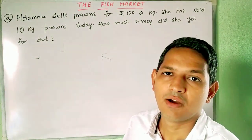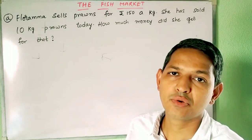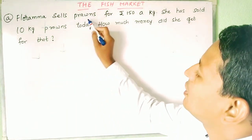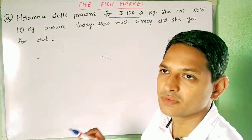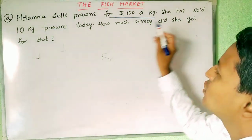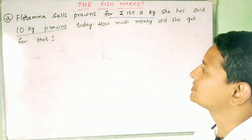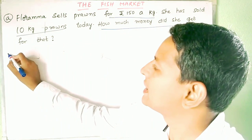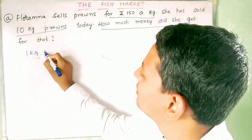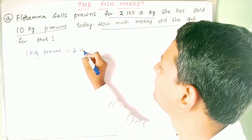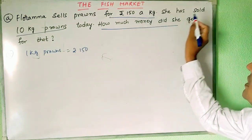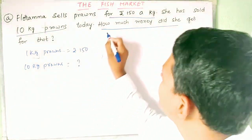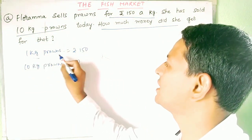Whenever we solve a word problem, we read it twice or thrice to find what is given and what is asked. Here, one kg of prawns is 150 rupees — that is what is given. She has sold 10 kg of prawns, and we need to find how much money she got. So 1 kg prawns is 150 rupees.